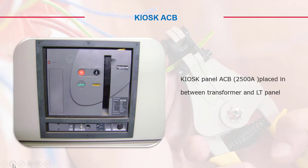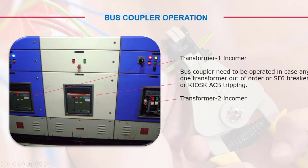We call it the QOS panel ACB. The 2500-amp ACB is placed between the transformer and the LT panel. For bus coupler operation: you can see transformer one incomer and transformer two incomer, with a bus coupler in between. In case one transformer fails, we can switch over through the bus coupler. The bus coupler needs to be operated whenever any one transformer or SF6 breaker has an issue.